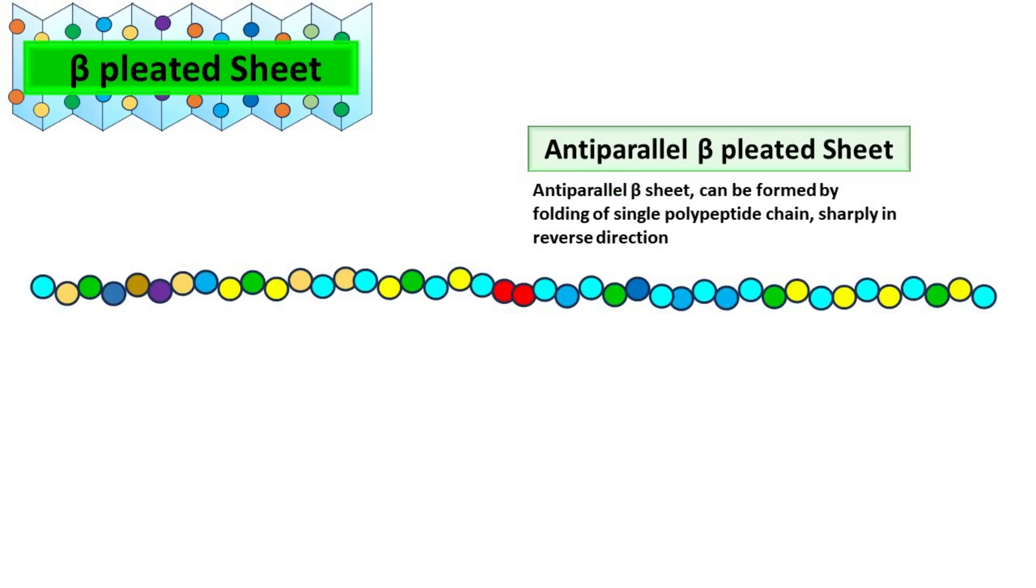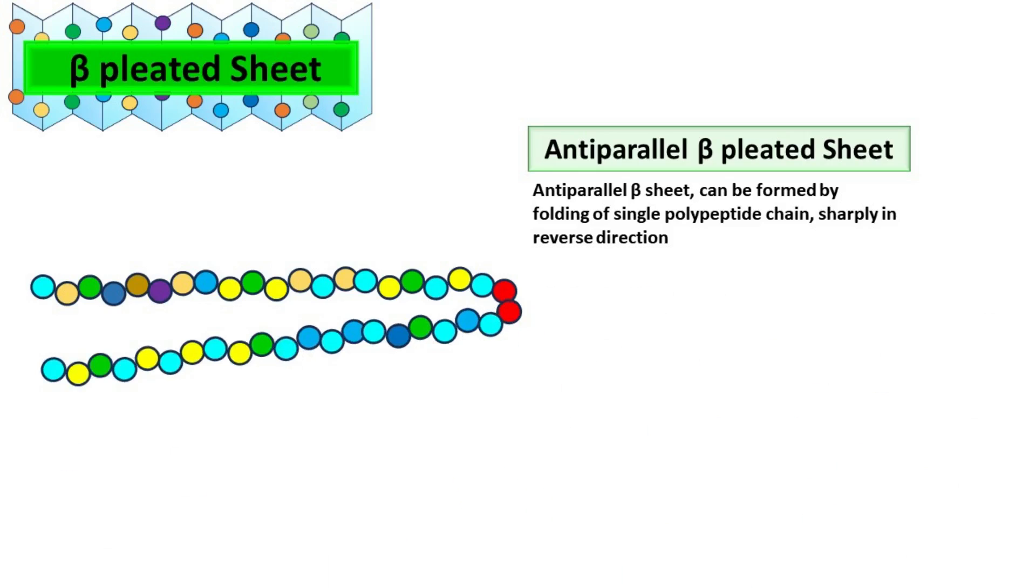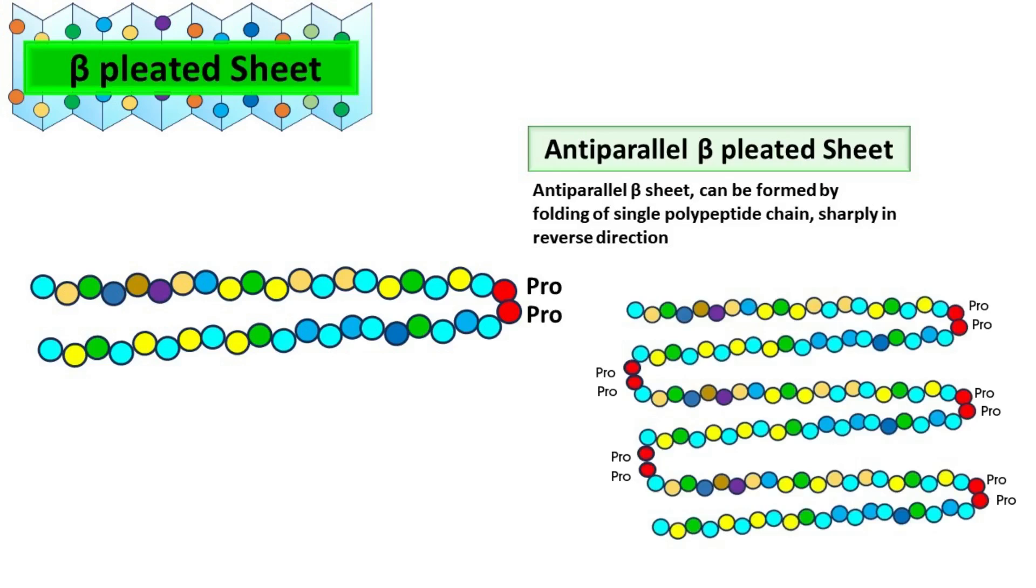It must be noted that the anti-parallel Beta-Sheet can also be formed by a single polypeptide chain that folds sharply in reverse direction. This sharp bending is usually caused by the presence of two consecutive proline residues. Thank you.